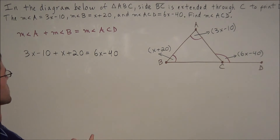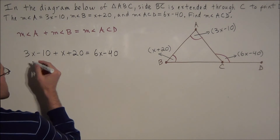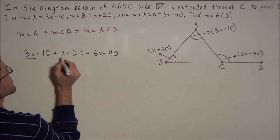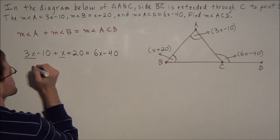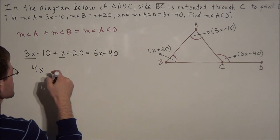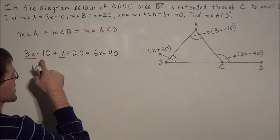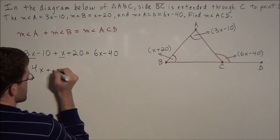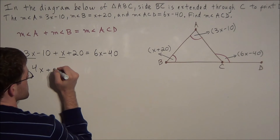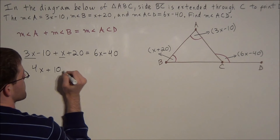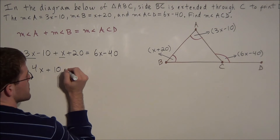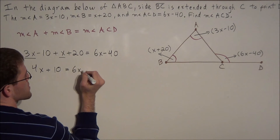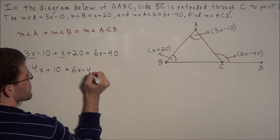Now we are solving this equation for x. We combine like terms: 3x plus x is 4x, and negative 10 plus 20 is positive 10. So we have 4x plus 10 equal to 6x minus 40.